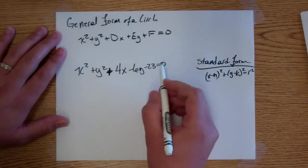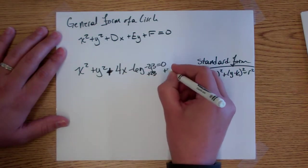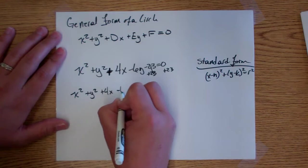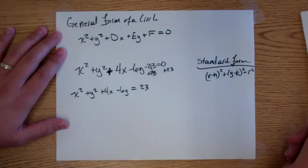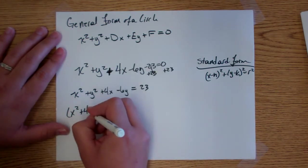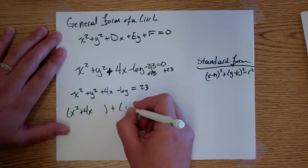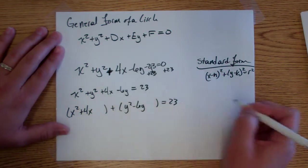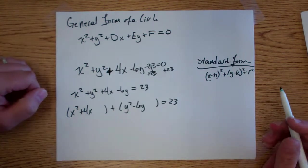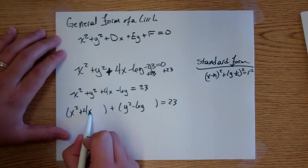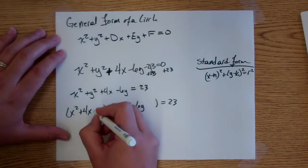First, get the 23 to the other side by adding 23 to both sides. Then group the like terms together: x squared plus 4x — leave a little bit of room — plus y squared minus 6y — leave a little bit of room — equals 23. Now we need to complete the square. To complete the square, take your x term: we have 4x, divide it in half to get 2, then square that to get 4.